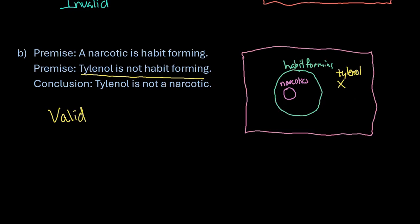Hopefully this helps you get an idea of how to use Venn diagrams to decide if a deductive argument is valid or not. If you have any questions please let me know, and if there are additional topics you would like me to cover, please let me know that as well.